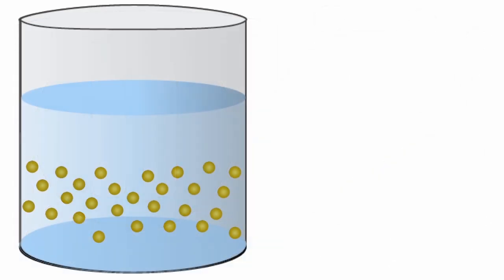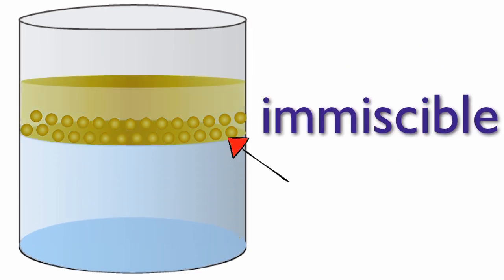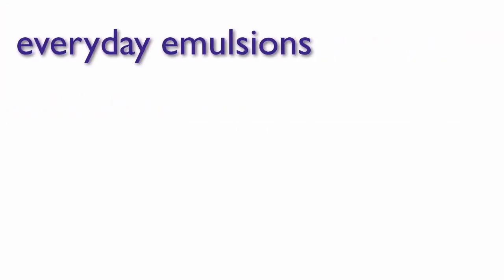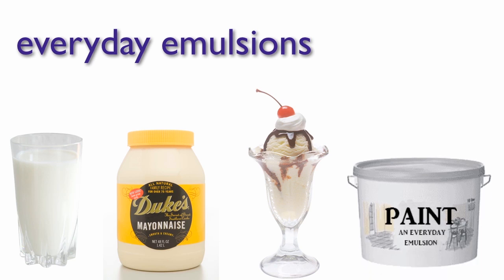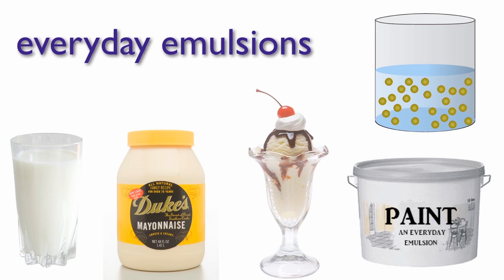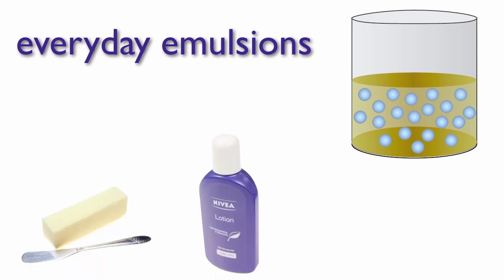Since oil and water are immiscible, the oil droplets will reform the original layer. Common everyday emulsions include milk, mayonnaise, ice cream, and paint. These emulsions are mostly oil droplets in water. Emulsions can also exist as water droplets in oil. Real life examples include margarine, lotions, and facial creams.